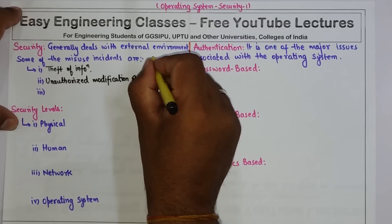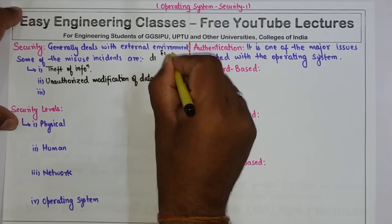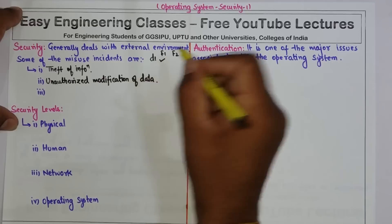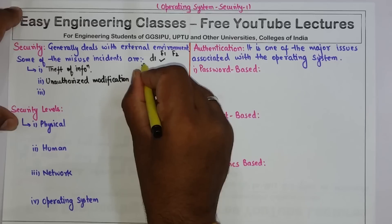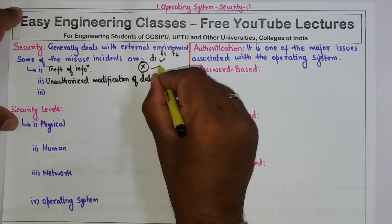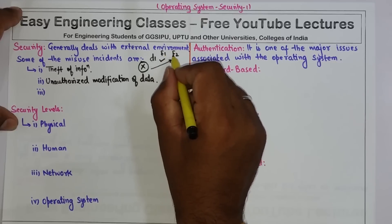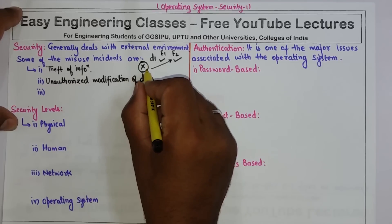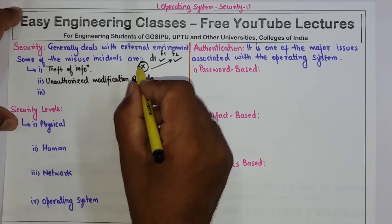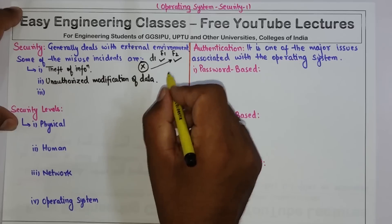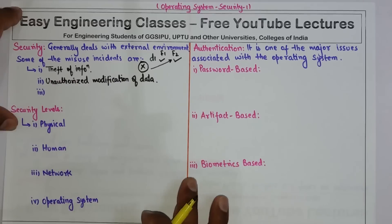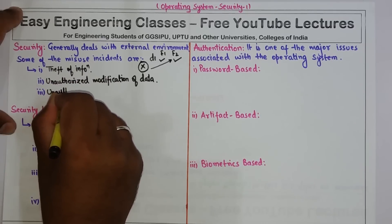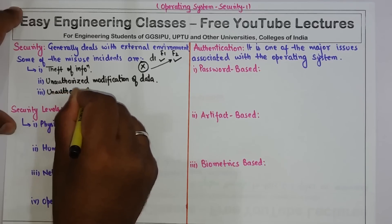An example of unauthorized modification: suppose there is a domain D1 and there are files F1 and F2, and initially only the process executing in domain D1 can access file F1. Now there is an attacker external to the system, and that attacker intentionally changes the domain access matrix and gives additional permissions. This unauthorized modification of the access matrix is an external threat to the operating system.